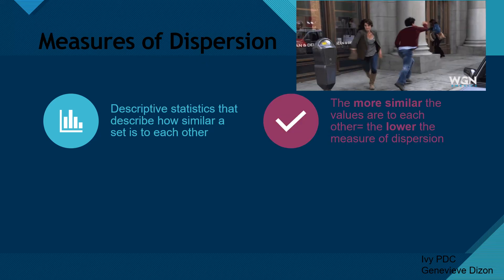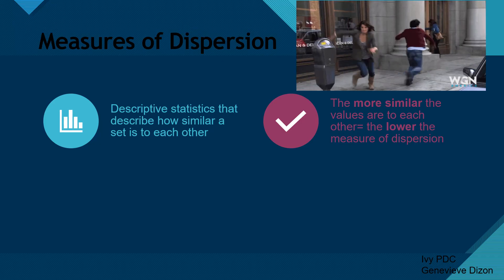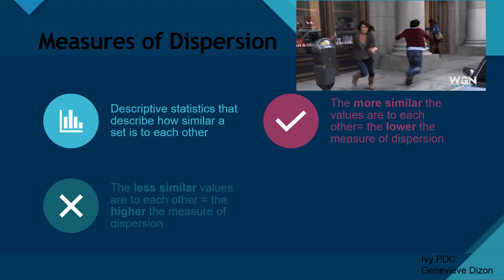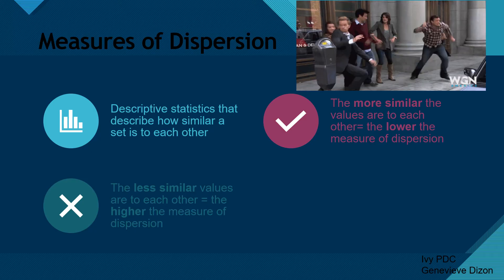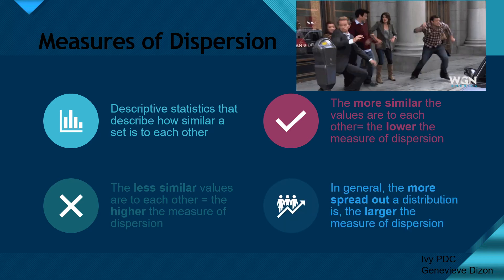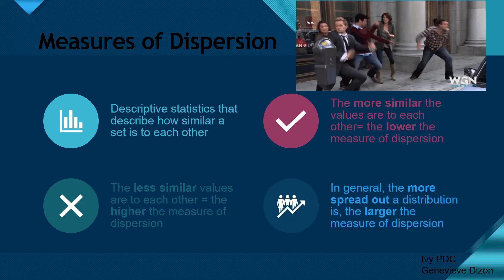General characteristics: the lower the measure of dispersion, the more similar the values are, because when there is very low dispersion, they are not scattered and the values are very similar to each other. On the other hand, if there is a higher value for the measure of dispersion, the values are not similar with each other. In general, the more spread out a distribution is, the larger the measure of dispersion.